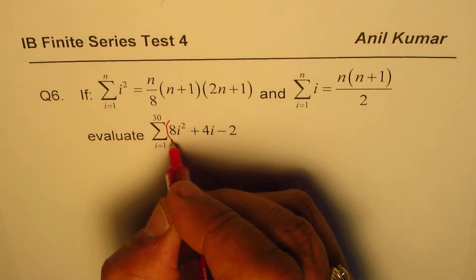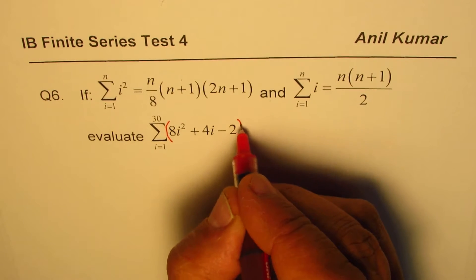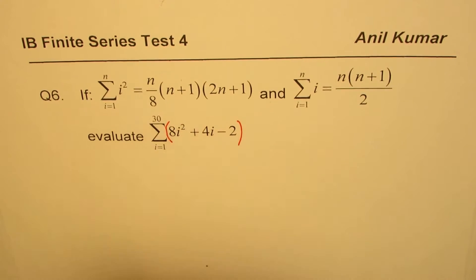Evaluate the sum of 8i² + 4i − 2 where i changes from 1 to 30. That's the question for you — you can pause the video, apply these formulas, and evaluate your solution.